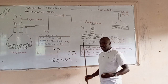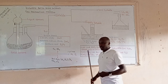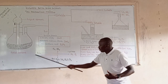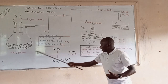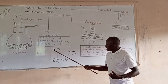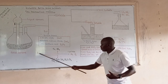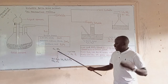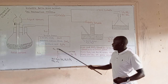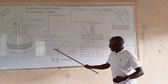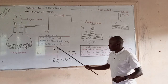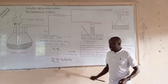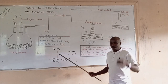Once gases are dried, they can be collected either by the upward delivery method or by the downward delivery method. Dry hydrogen gas and dry ammonia gas are collected by the upward delivery method.